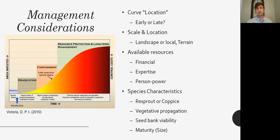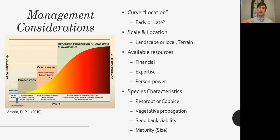Resources matter too — do we have the money and manpower to address a particular exotic species? That ties back into how intensive a management plan we need to develop. Also consider expertise: is there a knowledge gap in the local park staff, and can we outsource that information? And person power — are we a staff of five or fifty, and can we outsource to a volunteer group or hire a company to handle certain things?